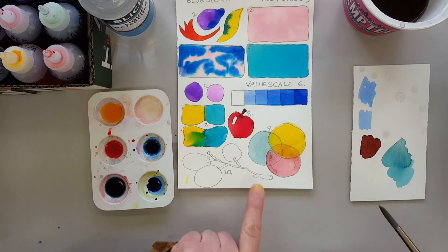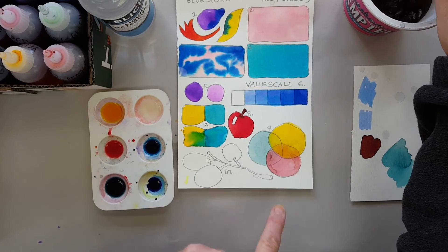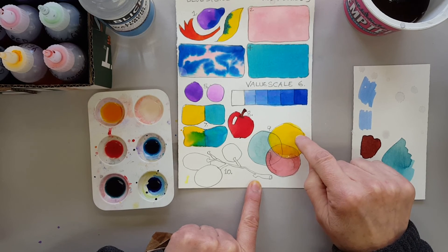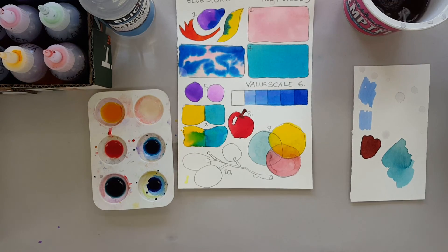And over the red it's making like a peachy orange, so you can see how it works by glazing, especially here by glazing a yellow over a red to create a new color instead of just mixing it.